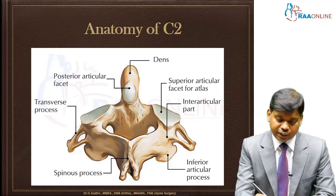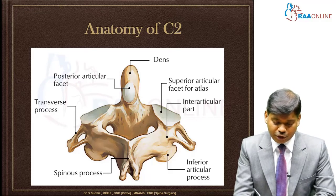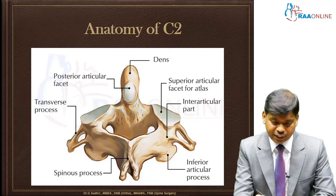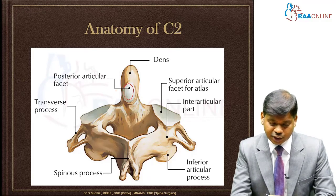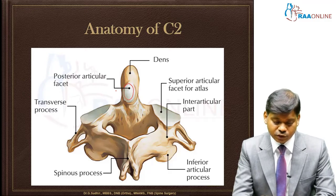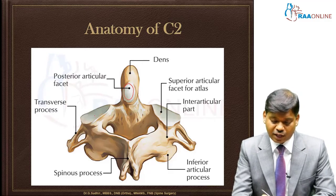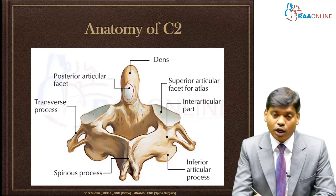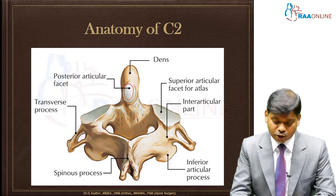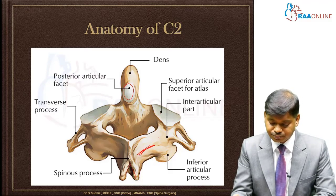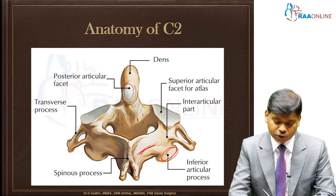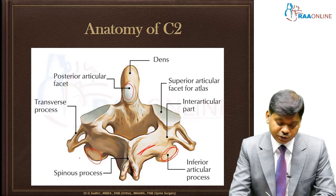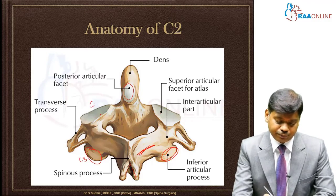This is the dens, this is the C2 body, this is the articular posterior articular facet of the dens, this is the superior articular facet which gets articulated with the atlas, this is the bifid spinous process, this is the lamina, and this is the articular process which gets articulated with C3.